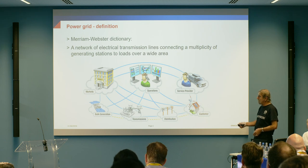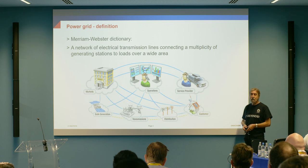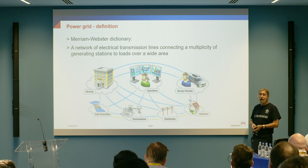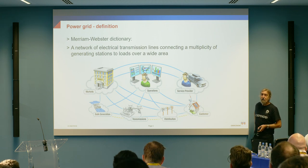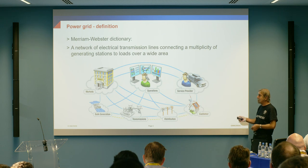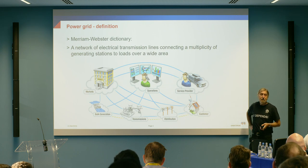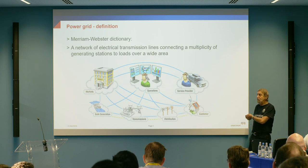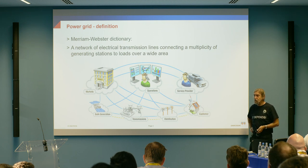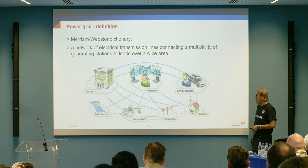In order to keep the physical layer of the grid in operation, we need to take care of anything that happens there. This is the responsibility of operations, the markets, the service providers, and the different protection, automation and control systems that exist at each of these components of the transmission, distribution, generation and prosumer level.